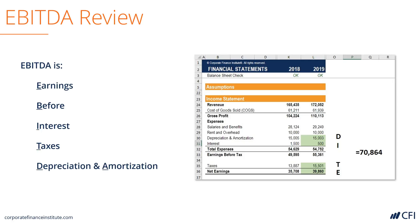Let's review EBITDA quickly. If we start at the bottom of a company's income statement, we can add back each of the components to arrive at earnings before interest, taxes, depreciation, and amortization.